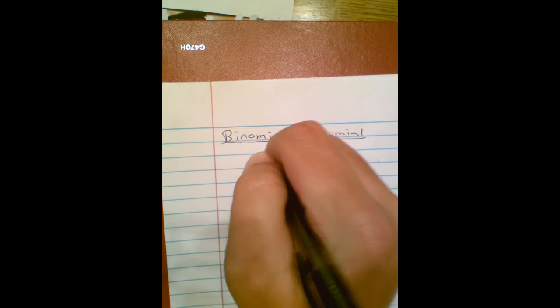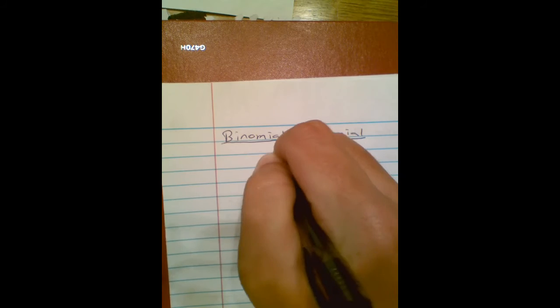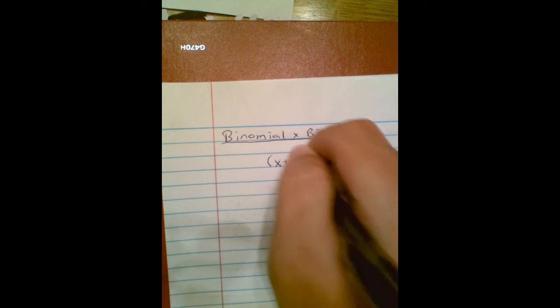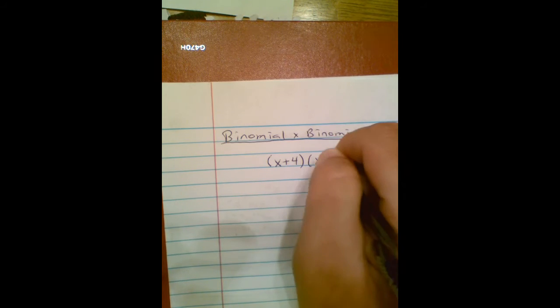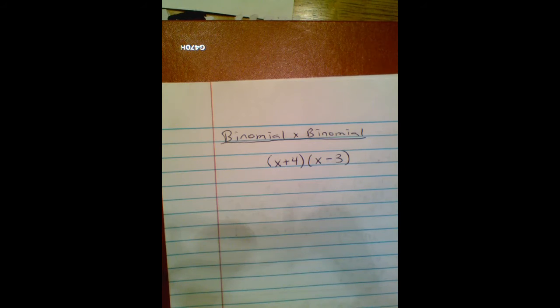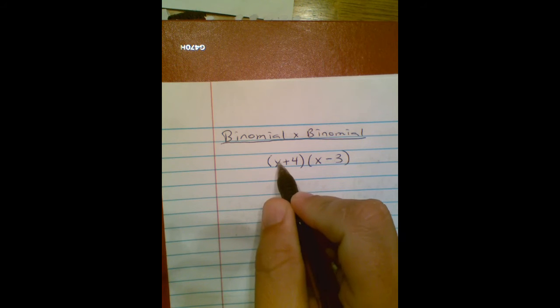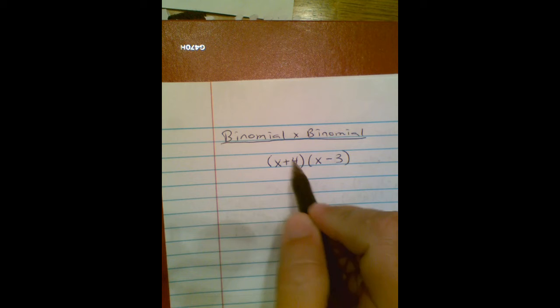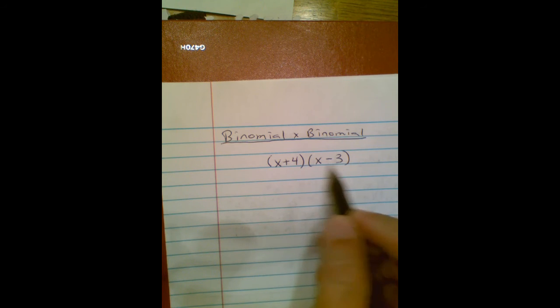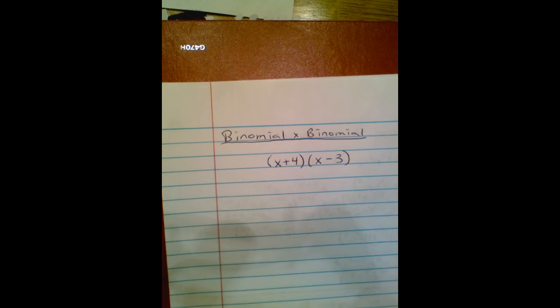So we're talking about (x+4) times (x-3). That's our problem there. In order to multiply this we need to do distributive property. We're going to take this x here and multiply it by the second set of parentheses. Then we're going to take this 4 here and multiply that by the whole set of parentheses.